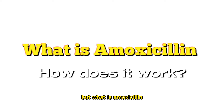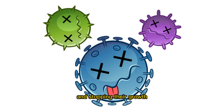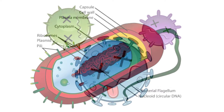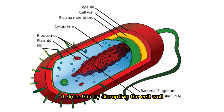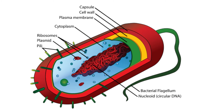But what is amoxicillin and how does it work? Amoxicillin works by killing bacteria and stopping their growth. It does this by disrupting the cell wall of the bacteria, which causes the bacteria to rupture and die.